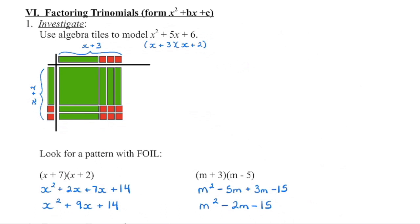These two terms combine to get that 9x. The same thing happens over here. So we have the first terms multiplied to get m squared. The outside terms multiplied to get that negative 5m. The inside terms multiplied to get that 3m. And then 3 times negative 5 is that negative 15. These two like terms combined to get us that middle term.